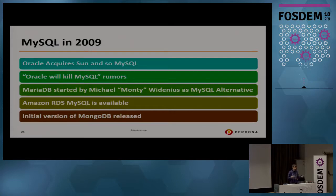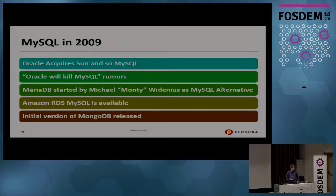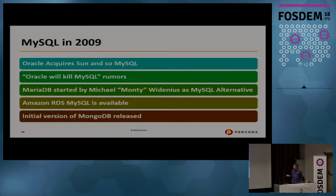That's also where we got a lot of rumors that Oracle would kill MySQL — has anyone heard that? Well, it's nine years and counting. We also saw Monty start his second database company — the MariaDB project — to ensure the future of MySQL and have an independently run MySQL alternative. And that is also the date when Amazon RDS for MySQL, the first database-as-a-service, became available.